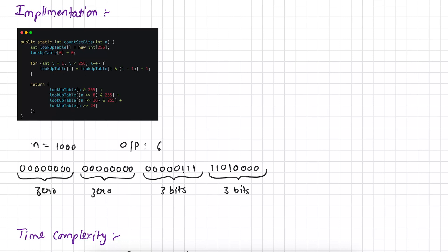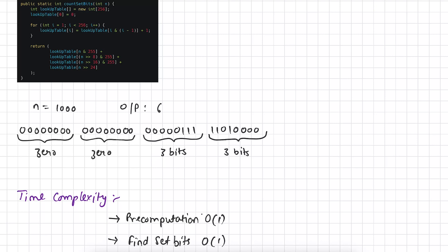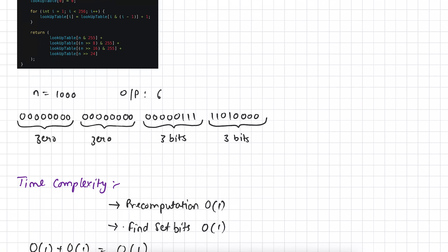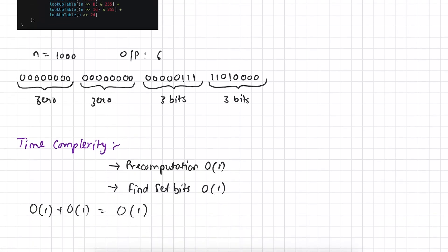Let's verify with n equal to 1000. The output is 6 because 1000 has 6 set bits: the first octet has 3 set bits, the second octet has 3 set bits, the third and fourth octets each have 0 set bits — totaling 6. Talking about time complexity: the pre-computation loop runs 255 times, which is a constant order of growth since it does not depend on the input. The set-bit-finding operation also runs in constant time. So the overall time complexity is O(1) + O(1) = O(1).